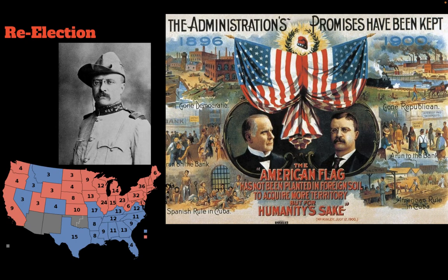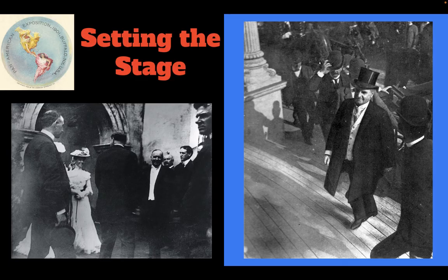He was re-elected in 1900, bringing along with him Teddy Roosevelt, who was serving as governor of New York and the great war hero of the Spanish-American War. He defeated Bryan again in a rematch. But anyways — his assassination.